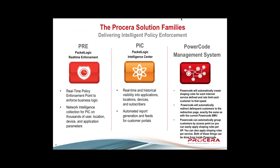We're more of a bump on the network instead of a hop. Through the box we'll be able to show you what all your users are doing by application, what percentage of your network is doing what types of applications. The PRE has a 500-gig on-board hard drive and houses a device called the PIC — the intelligence center — where all the statistics and real-time analytics live.